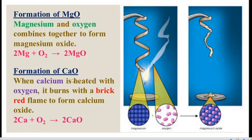The next one is formation of calcium oxide. When calcium is heated with oxygen, it burns with a brick red flame and produces calcium oxide. When metals react with oxygen, they burn with a colored flame — here calcium burns with a brick red flame, indicating the presence of calcium, and it forms calcium oxide. Calcium combines with oxygen to produce calcium oxide, therefore it is also a combination reaction.